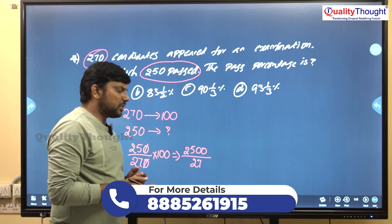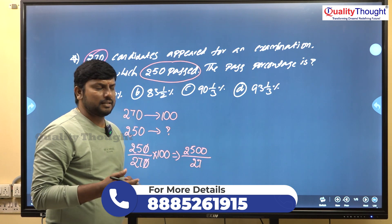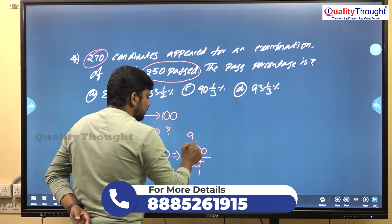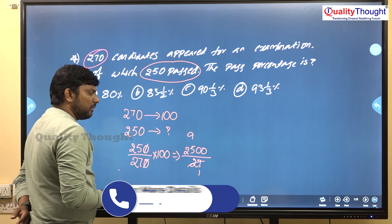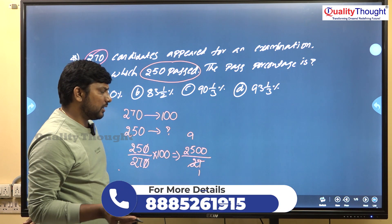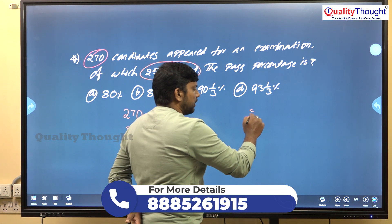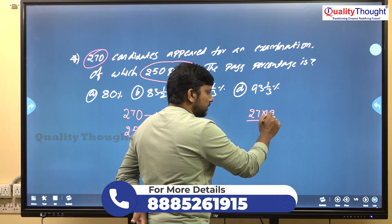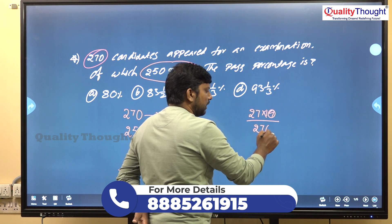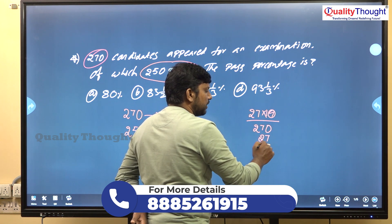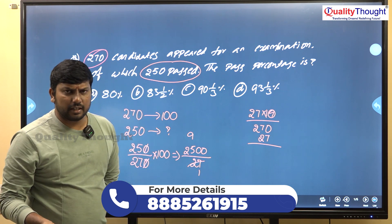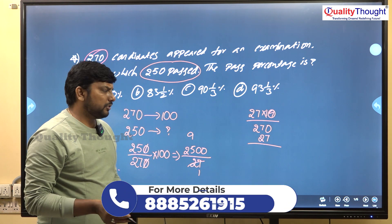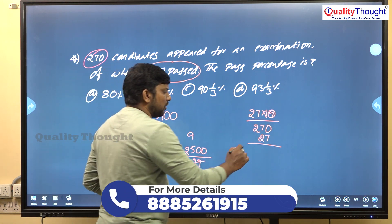27 into 10 is 270, minus 27 gives 243. So 270 minus 27 equals 243.